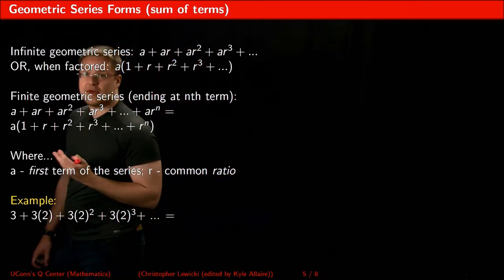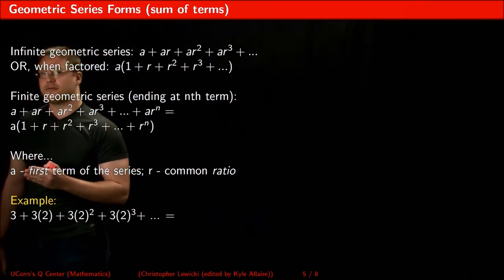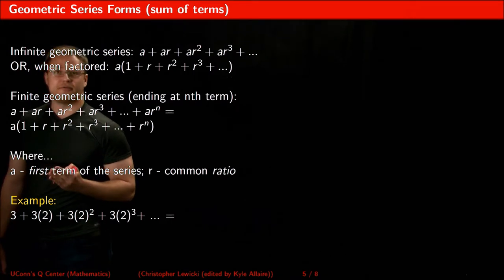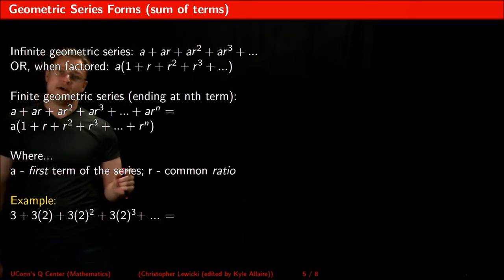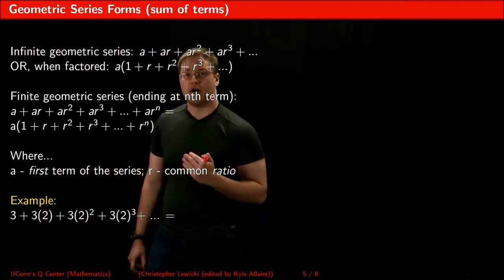To help you remember that A stands for the first term in your series, think about it just like the alphabet. A is the first letter in the alphabet. It's also the first term in your geometric series. The R stands for the common ratio of your series. Think R for ratio.